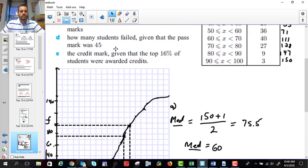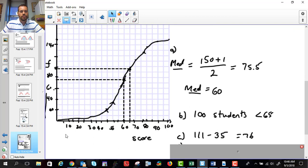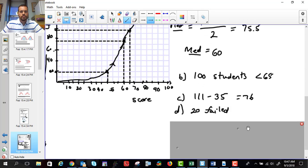Part D says, how many students failed given that the pass mark was 45? So we go to 45 as a mark. So we're going to go again here. There's 45 up to the graph and over, and it looks like about 20. So we say 20 people failed.